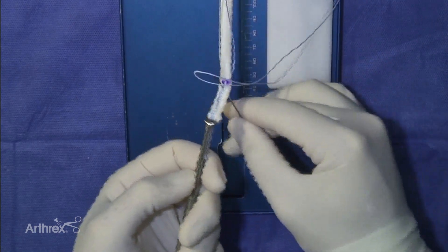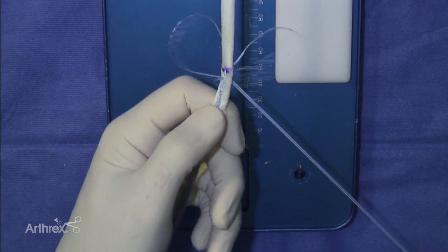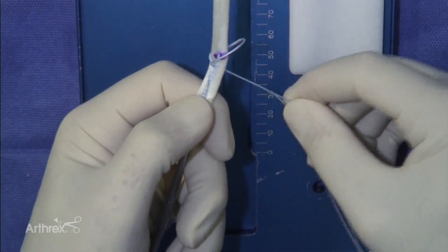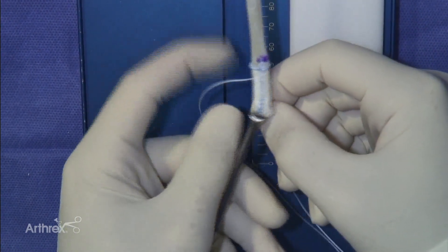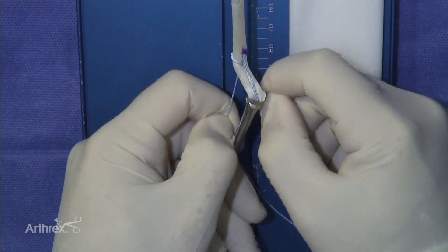Pass the needle through the fiber tag and graft just distal to the mark on the graft. Pull the suture through the graft to create the first set of stitches. Pull each fiber loop suture strand firmly to tension the stitch.